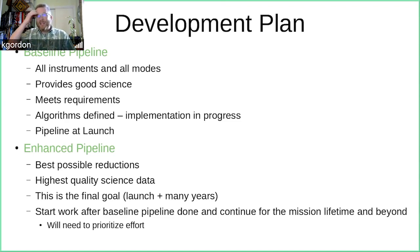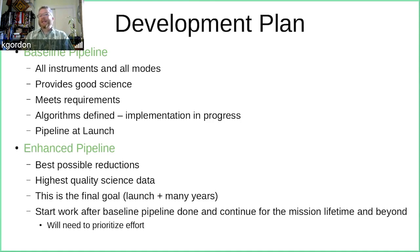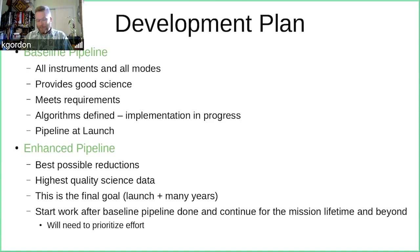All the algorithms are basically defined and most are implemented; it's still in the finishing stage. The enhanced pipeline is what we move to once the baseline is done — we try to get the best possible reductions in a pipeline environment. This is an asymptotic goal: you work on it as the final target of launch plus many years, providing the highest quality science data. It's a never-ending process of trying to improve data quality and reduction.